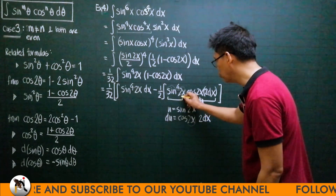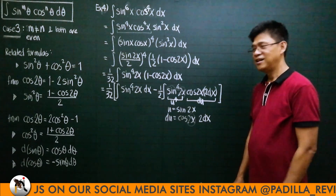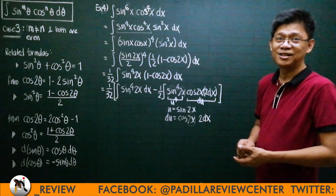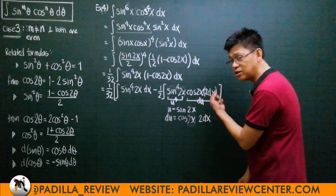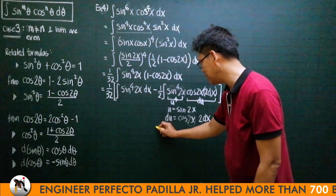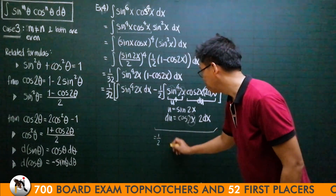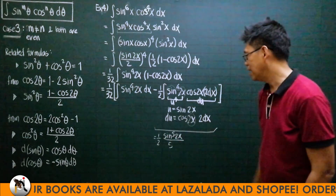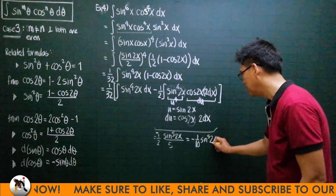The second integral becomes u⁴ du by the power formula. With u = sin(2x), integrating u⁴ du = u⁵/5. With the factor of 1/2, this portion evaluates to (1/2)·[sin⁵(2x)/5] = sin⁵(2x)/10. Since it was subtracted, this term is −(1/10)·sin⁵(2x).